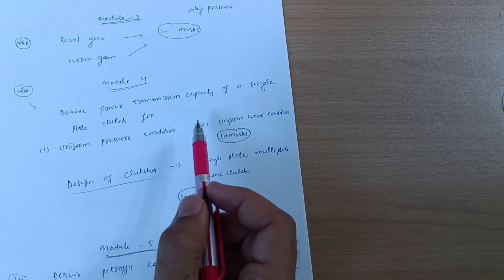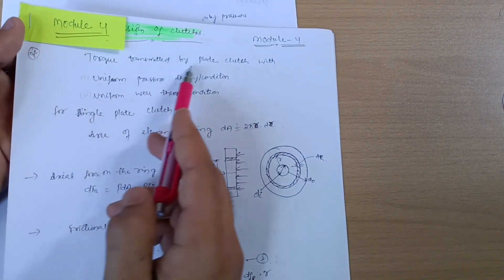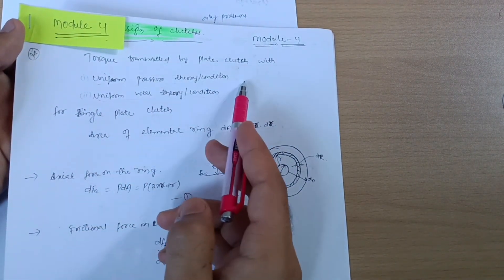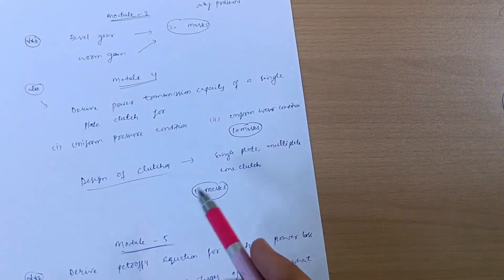The answer for this is also here. See here, design of clutches. This is torque transmitted by plate clutch with uniform pressure theory and uniform wear theory. You will get the answers accordingly.